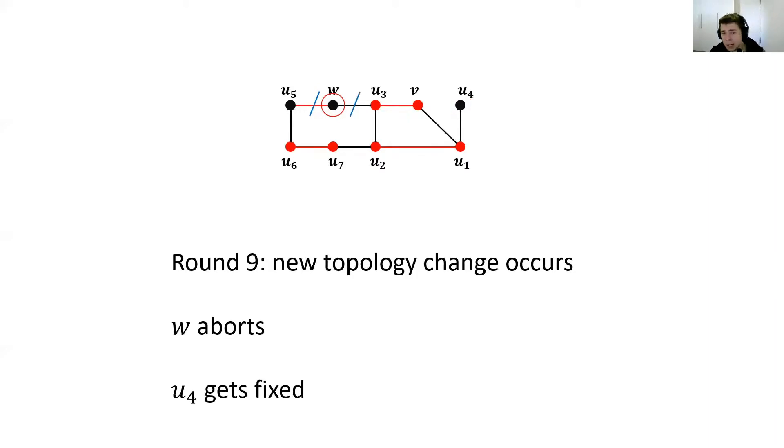But suppose that in round nine, a new topology change occurs. The edge W, U3 gets deleted. So W aborts, but U4 still gets fixed. As you can see, this does not hurt the amortization because we pay for the delay by the new topology change. If no new topology changes occur for the dirty nodes, then eventually we converge to a legal maximal matching. As another note, here we maintain the fact that the nodes which are designated to be fixed are at least four hops apart. But specifically for maximal matching, you could make do with just three hops.